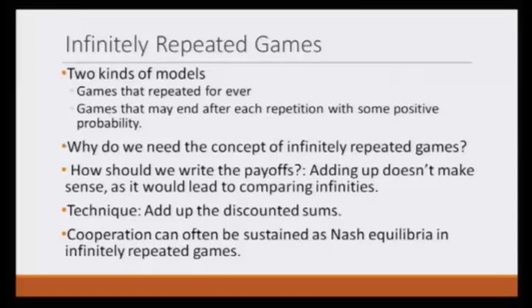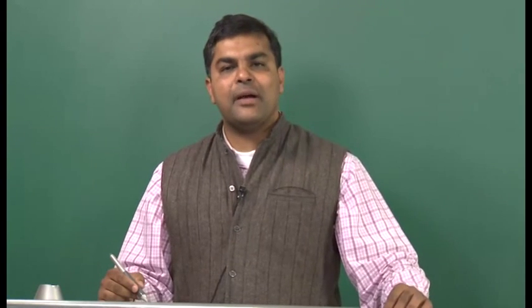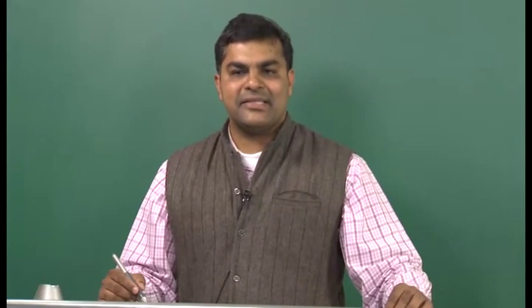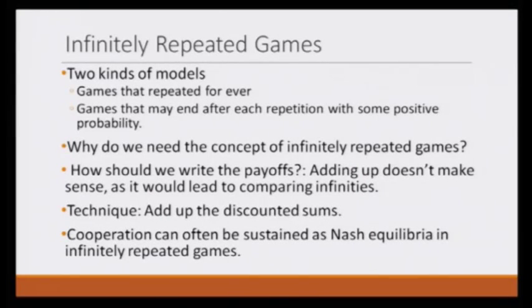But here the problem is: how should we write the payoffs? Because think about two players cooperating forever or defecting forever. What we have seen in the prisoner's dilemma is that both players are earning 1 and 1. But if this prisoner's dilemma game gets repeated forever, how should we add up? Because no matter which payoff we add up, if we add any positive number for infinite times we will get infinity. So how can we compare infinity with infinity? That is the problem, but this is an easy one — we should be able to solve it using the notion of discounted sum. The question is very similar to what we were trying to answer in the case of finitely repeated games.